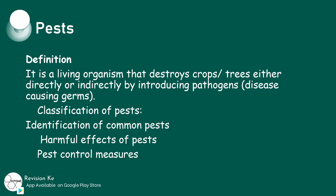Pests are defined as a living organism that destroys crops or trees either directly or indirectly by producing pathogens. Pathogens are disease-causing germs.